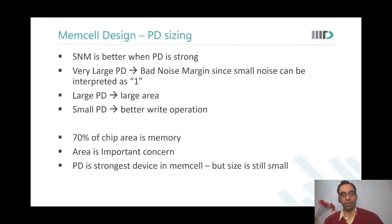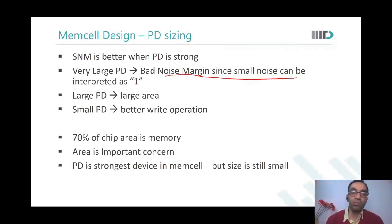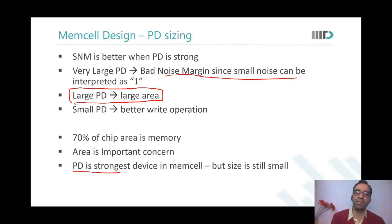Coming to the pull down: SNM is better when pull down is strong, and pull down has to be stronger than the pass gate. But if the pull down is very, very large, the other side can turn on very easily, so we don't want a very large pull down either. A large pull down also has a direct impact on area. In fact, pull down is the strongest device in a memory cell.